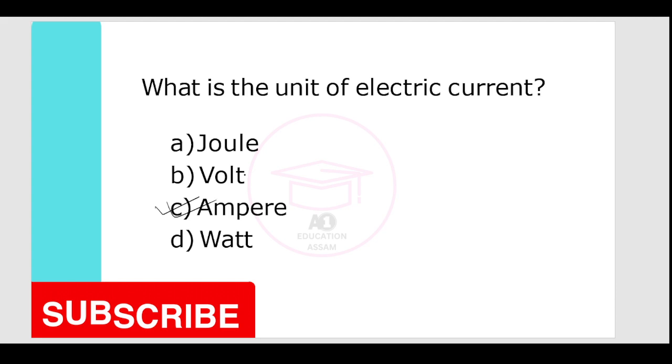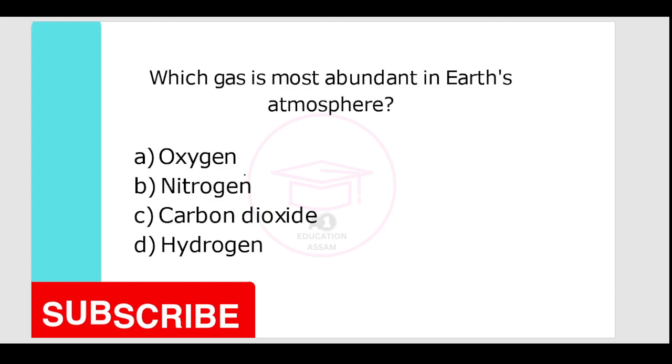Which gas is most abundant in Earth's atmosphere? Options are oxygen, nitrogen, carbon dioxide, hydrogen. Your correct answer is option B, nitrogen, 78 percent.